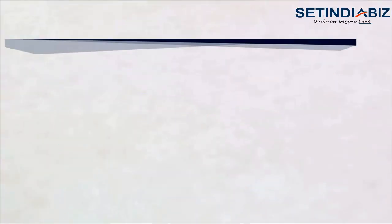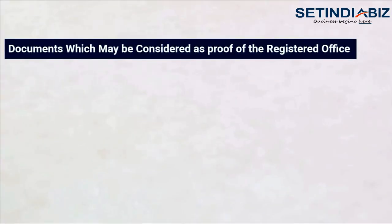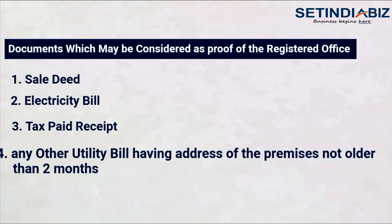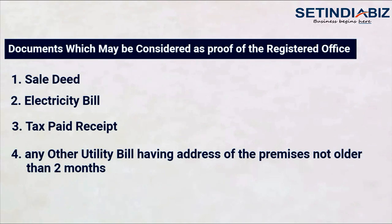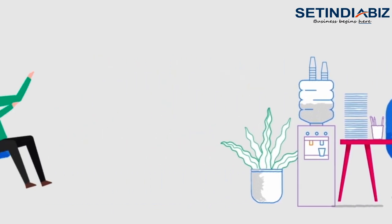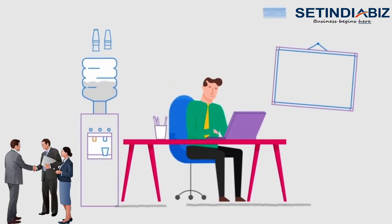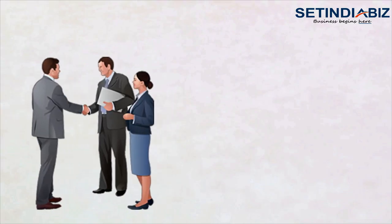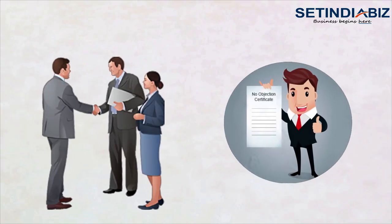The following documents may be considered as proof of the registered office: 1) Sale deed, 2) Electricity bill, 3) Tax paid receipt, or 4) Any other utility bill having the address of the premises, not older than 2 months. As a property or office can be used only with the consent of its owner, we also need a no objection certificate from the owner of the premises.